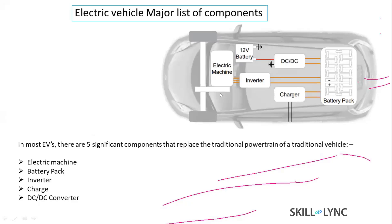The charger is another key component. The battery pack needs to be charged from a three-phase AC supply — for example, from a home charging point. One end of the charger connects to the three-phase AC home supply, and the other end connects to the battery pack. The charger converts the three-phase AC current into DC, which is used to charge the battery pack whenever it needs charging during idle conditions.